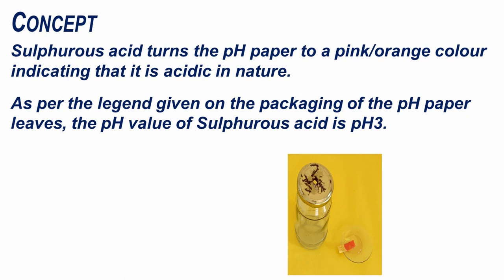Sulfurous acid turns the pH paper to a pink orange color indicating that it is acidic in nature. As per the legend given on the packaging of the pH paper leaves, the pH value of sulfurous acid is pH 3.